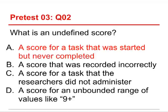For example, it applies to a task that was started but never completed. If something got recorded incorrectly, that's just a recording error. If the researchers did not administer it, that's missing data — but intentionally missing data. And the bottom choice is what's called an open-ended score, the 9+.